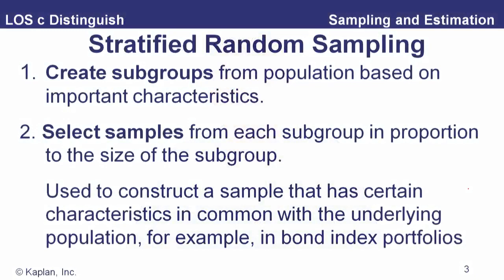There's another kind of sampling called stratified random sampling. The idea is to sample from a population but preserve key characteristics of the population, so we look at subgroups based on these characteristics.